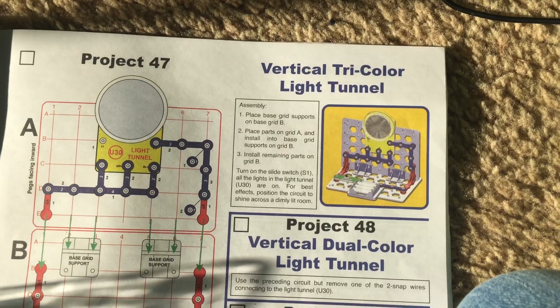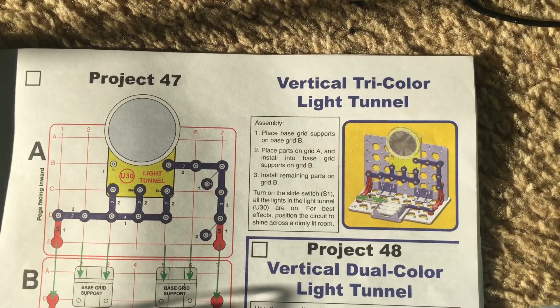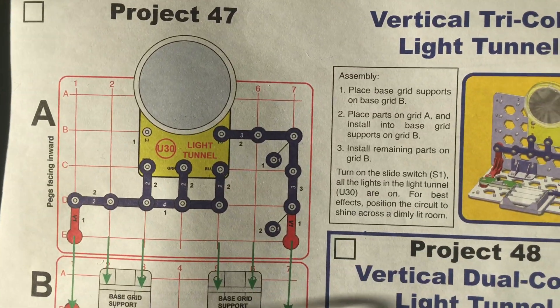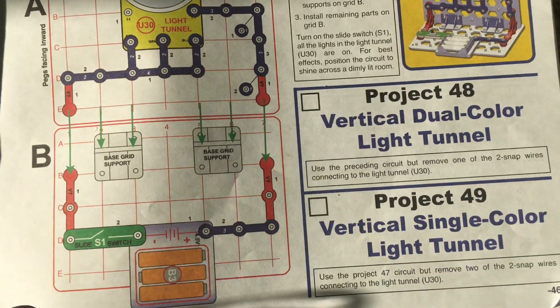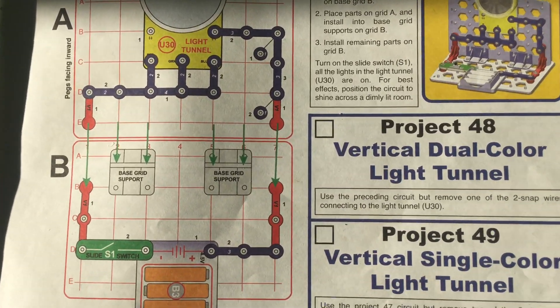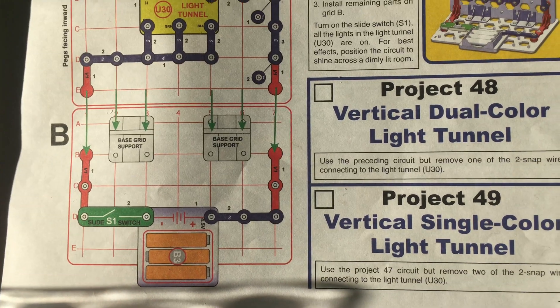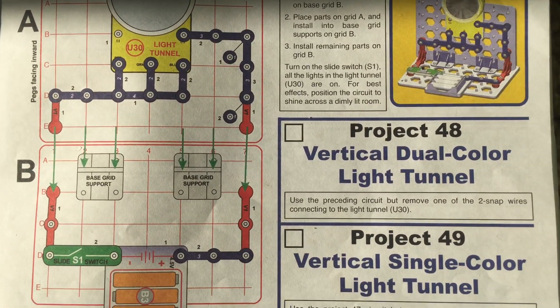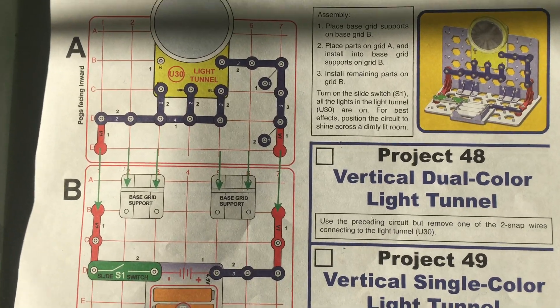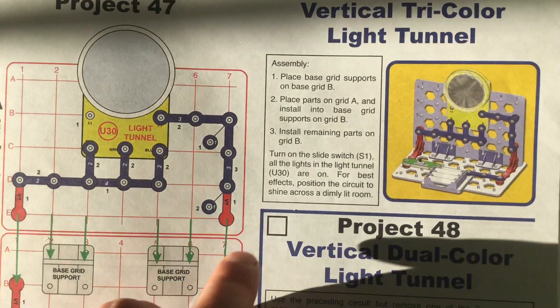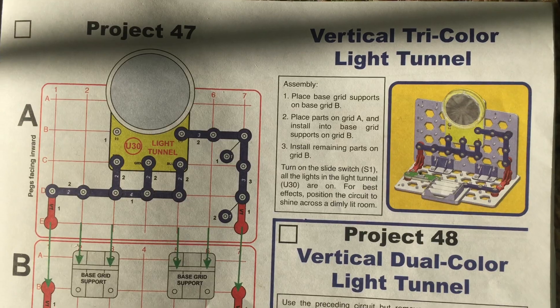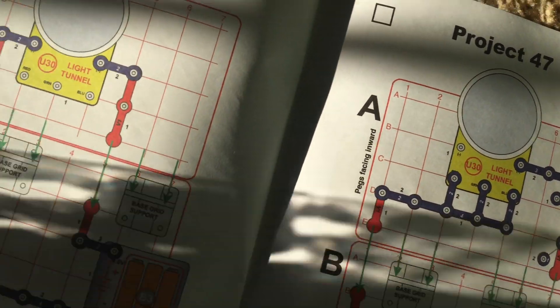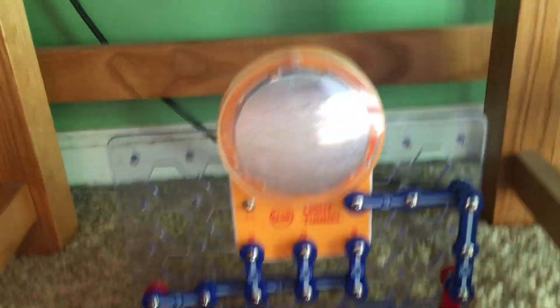Project 47, Vertical Tri-Color Light Tunnel. We are going to build this circuit, which also uses two small base grids. And, we'll need two base grid supports to mount the vertical grid. And, after assembling the parts according to this diagram and these instructions, we will put the circuit in a dimly lit area and turn on the slide switch.